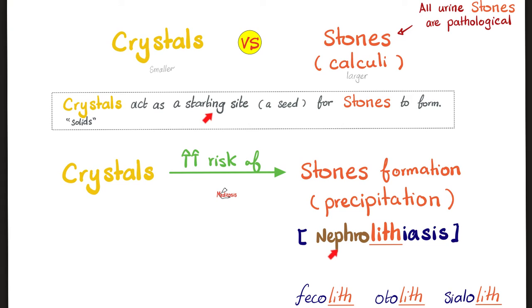What does the word 'nephro' mean? Kidney. How about 'lith'? Stone. Such as fecalith — the stone in the stool — which can obstruct my appendix causing appendicitis. How about a stone in my ear? Otolith. How about in my salivary glands? Sialolith. Sialo means salivary, oto means ear, feco means feces.